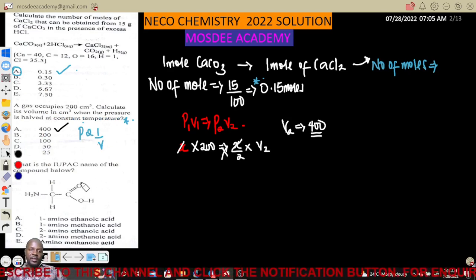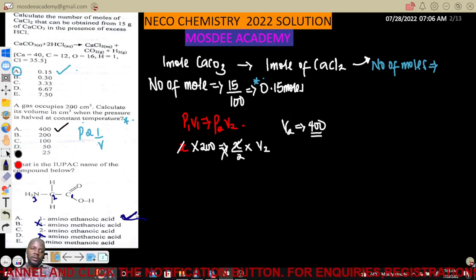Question 6: IUPAC name of this compound. When you have an amine and a carboxylic group, carboxylic takes priority. Number the carbons: one, two. The compound has two carbons (ethanoic, not methanoic), so it's 2-amino ethanoic acid, option D.